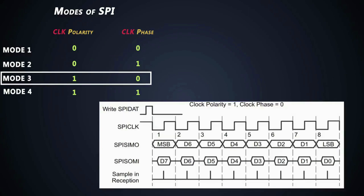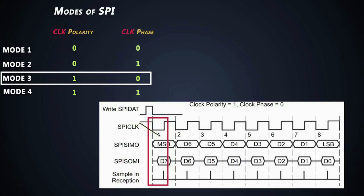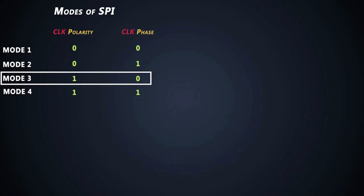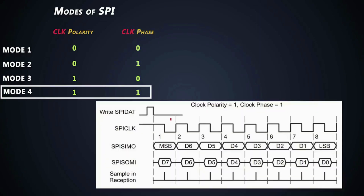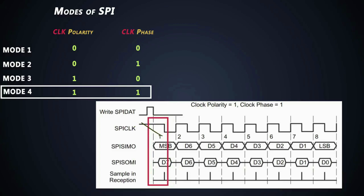In the third mode, the clock polarity is one and clock phase is zero. The clock starts without delay but starts from the high state, and data is output on the falling edge of the clock signal. The data is latched on the rising edge. In the last mode, the clock polarity is one and clock phase is also one. The SPI clock starts after some delay and data is output one half cycle before the first falling edge of the SPI clock. Input data is latched on the falling edge of the SPI clock, but later data is output on the subsequent rising edges of the clock.